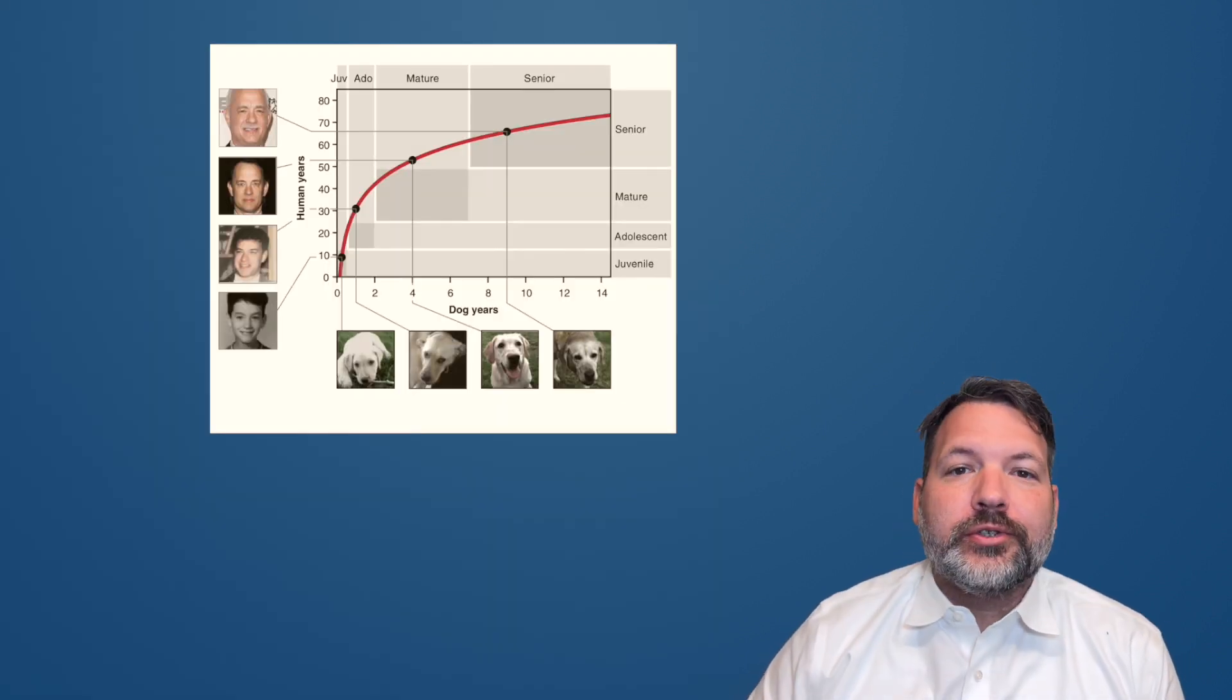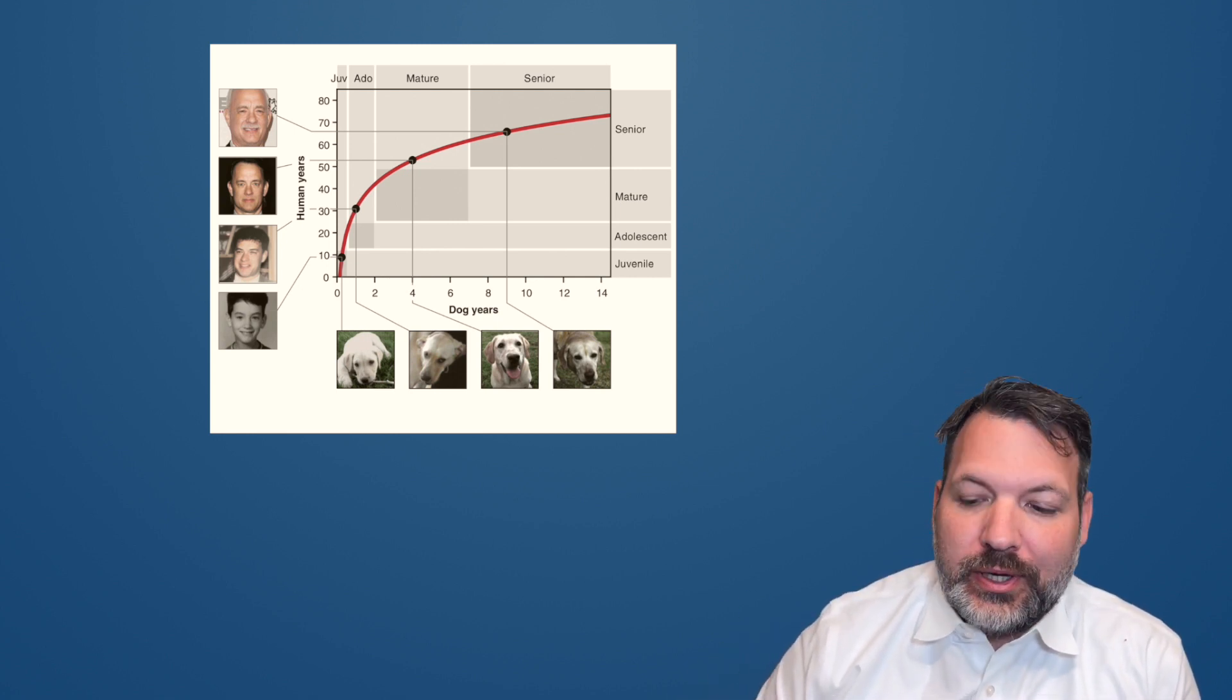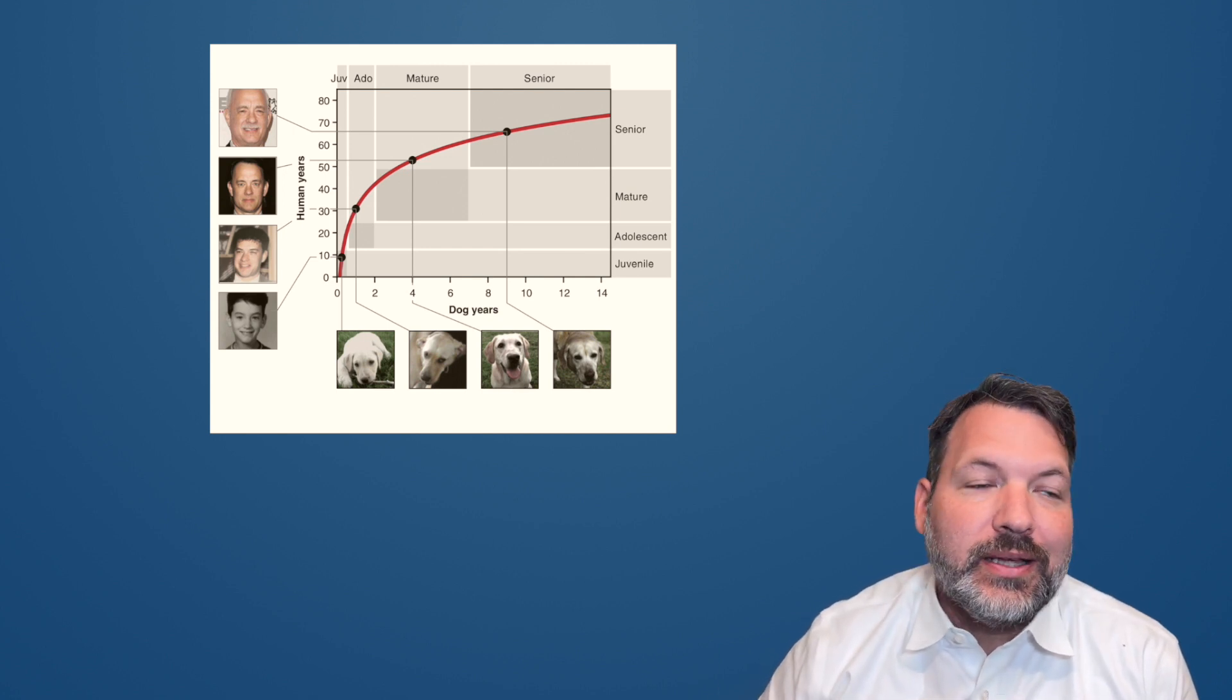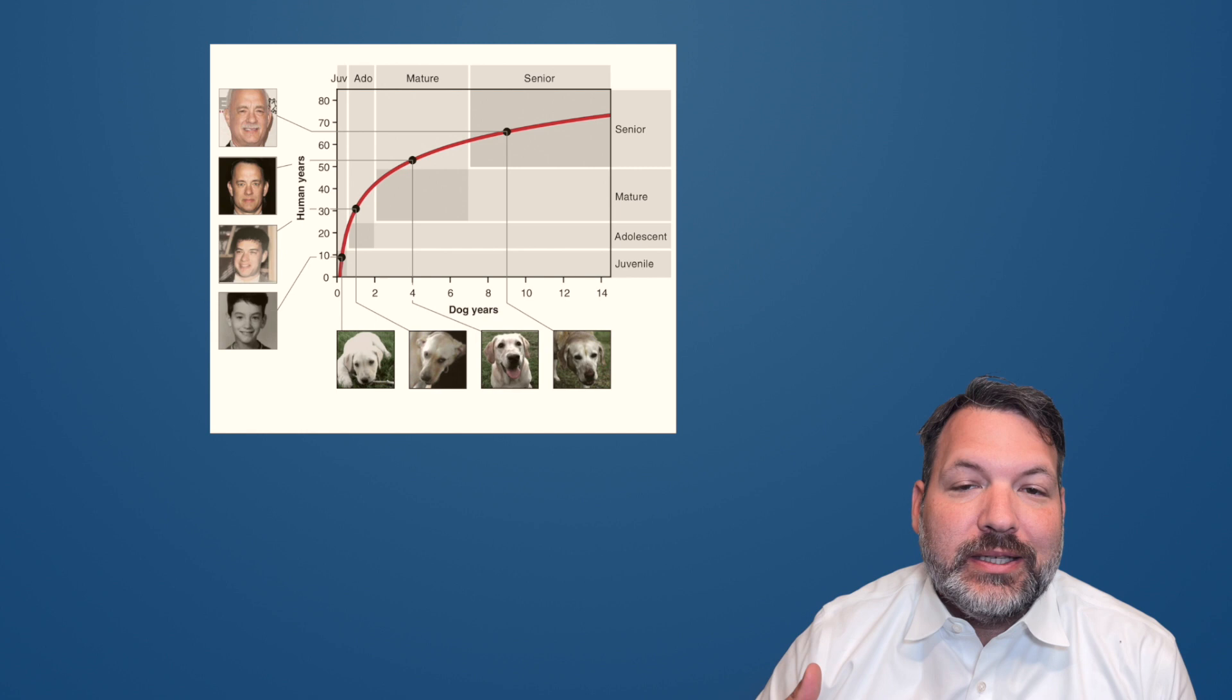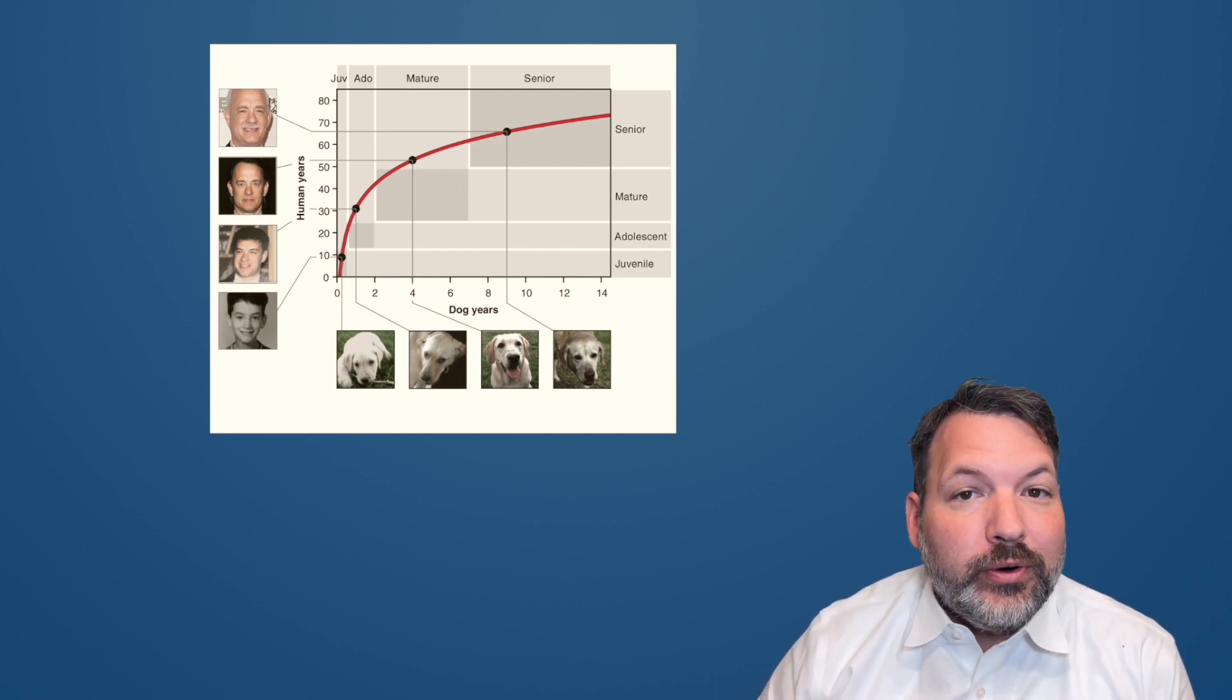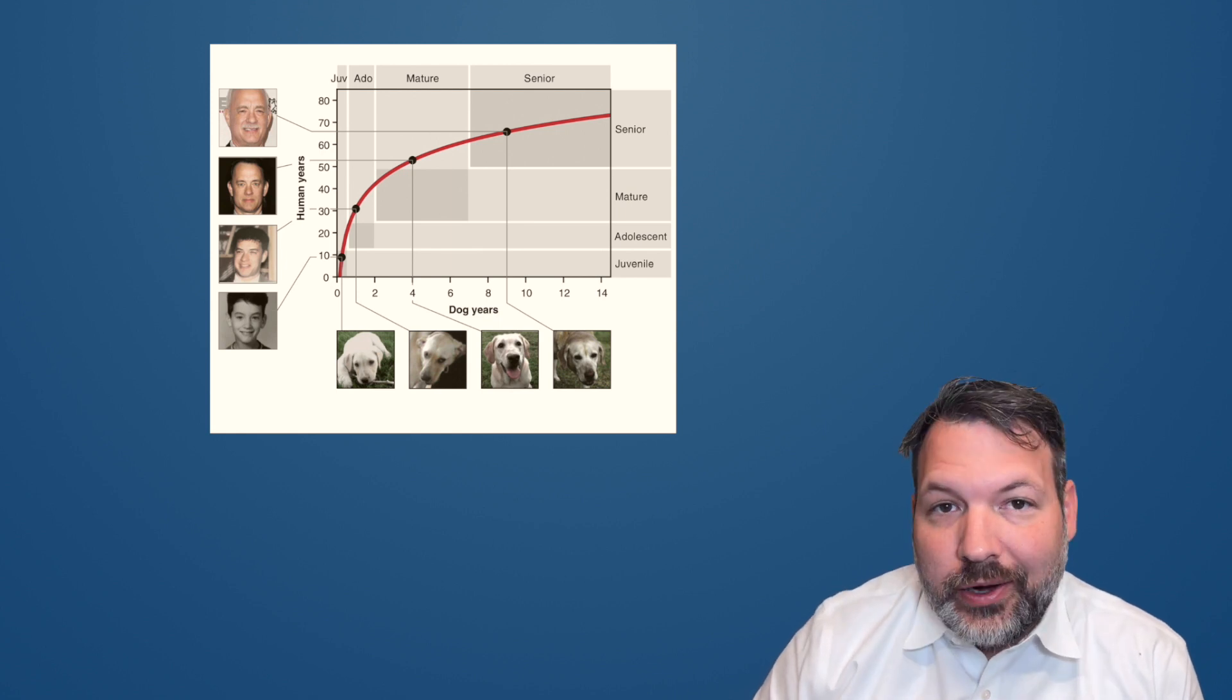The problem the researchers found is that this doesn't really correlate the kinds of aging milestones you would associate with a dog's life and a human's life in the way that we would expect. That is, a one-year-old dog isn't like a seven-year-old, as the researchers found. A one-year-old dog is more like a 30-year-old. They can have doggy children and rent doggy cars.